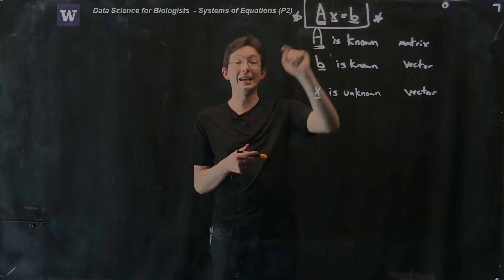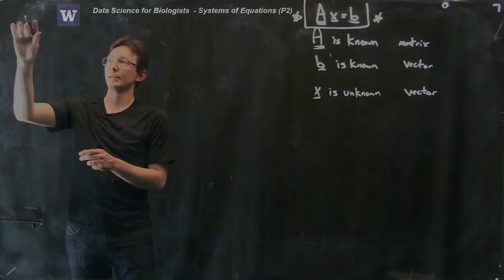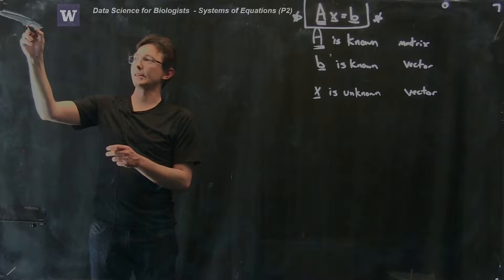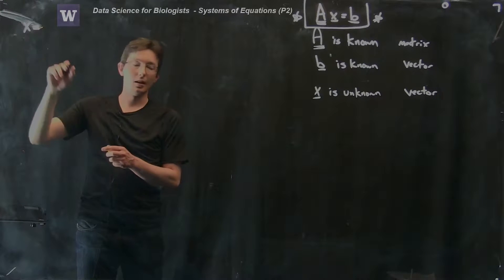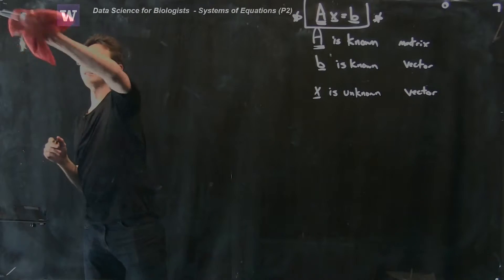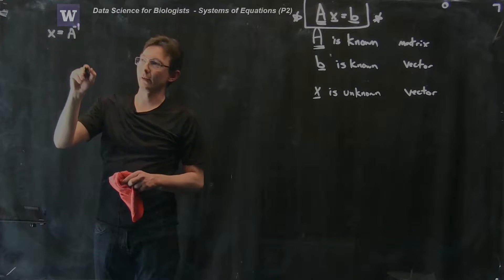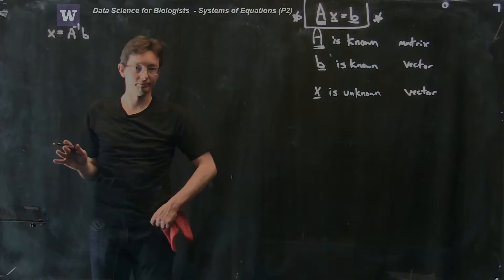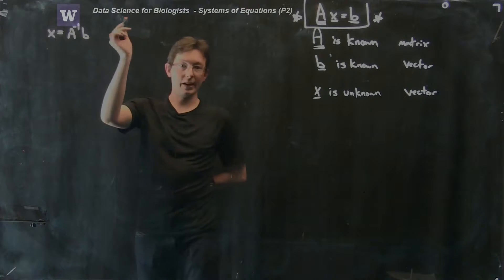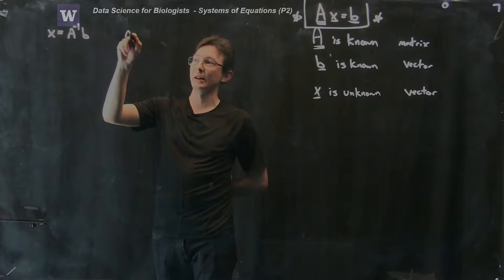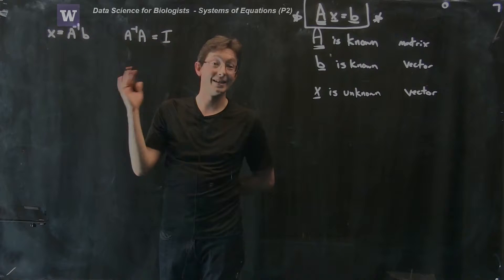What I'd like to do is find the inverse of A. So if Ax equals b, then I can say that x equals A inverse times b.